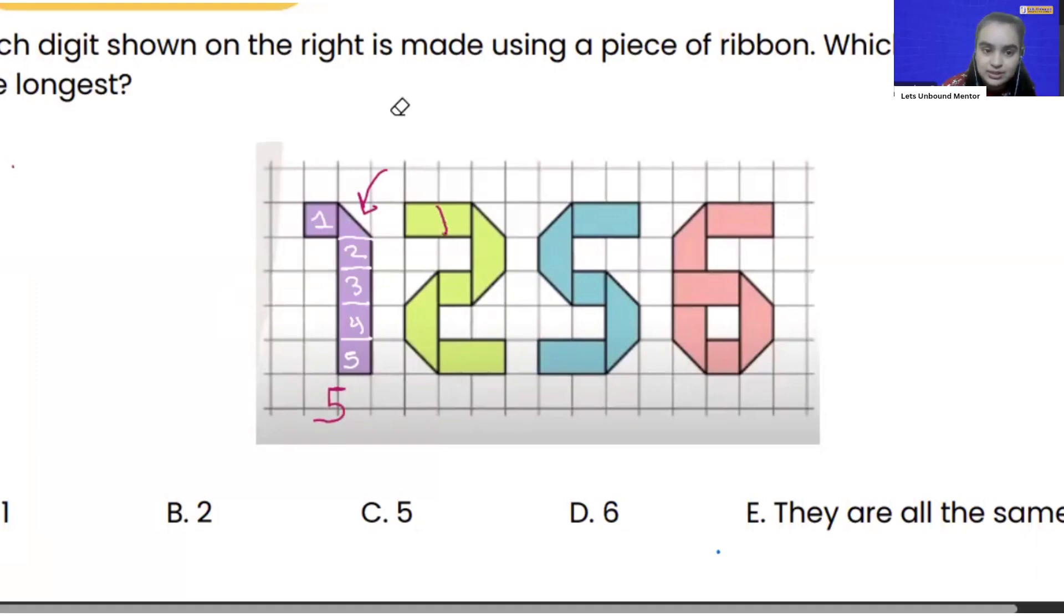Now if I do the same thing for the second shape so how many squares will I get? 1, 2, 3, 4, 5, 6 and 7. So that means it is not option number A.